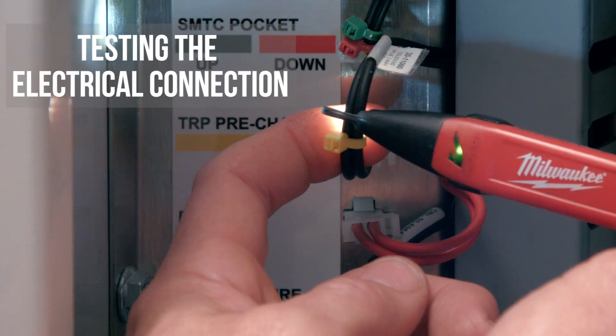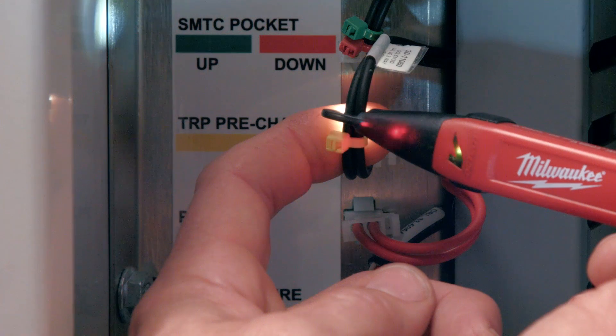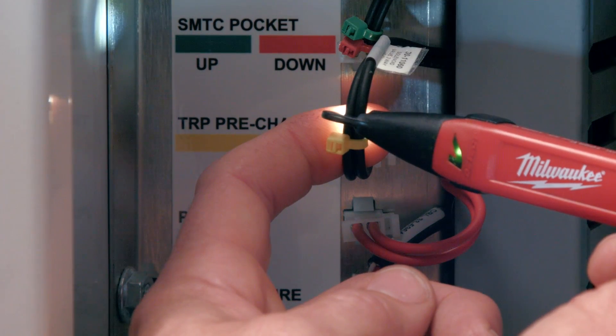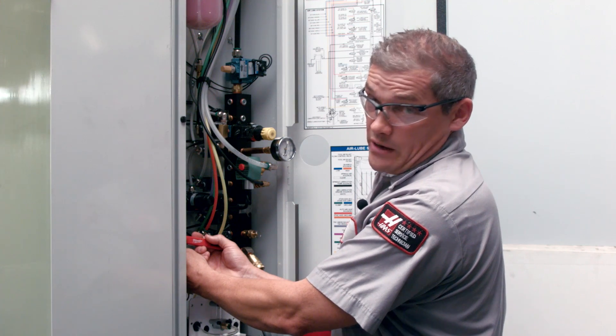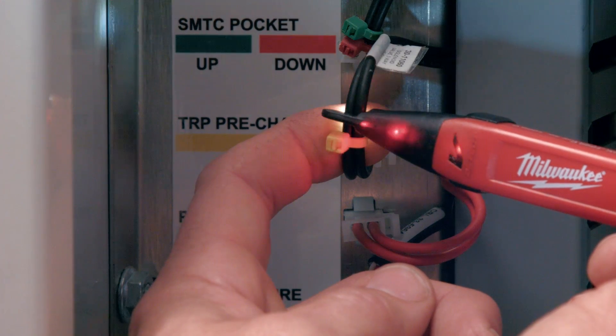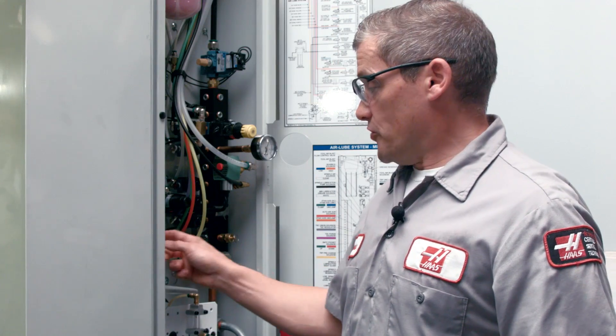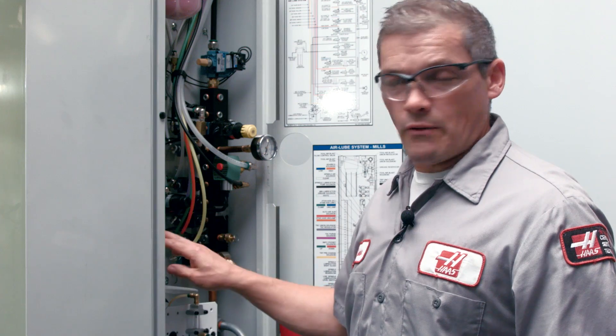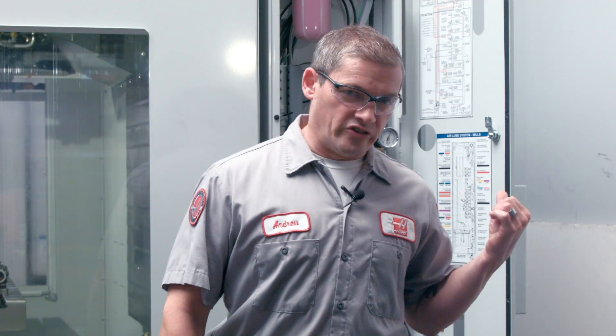Jamming these probes into the connector carelessly can easily damage the pins and that equals a bad connection. That's not good for the connector and it also confuses the diagnostic process. With my program running I just hold the detector right beside the wires going to the solenoid. And I can see and hear that I've got power going to the solenoid every time it fires. That means this solenoid has a good electrical connection. Now if I didn't see voltage here then I need to troubleshoot the wiring coming to this solenoid.